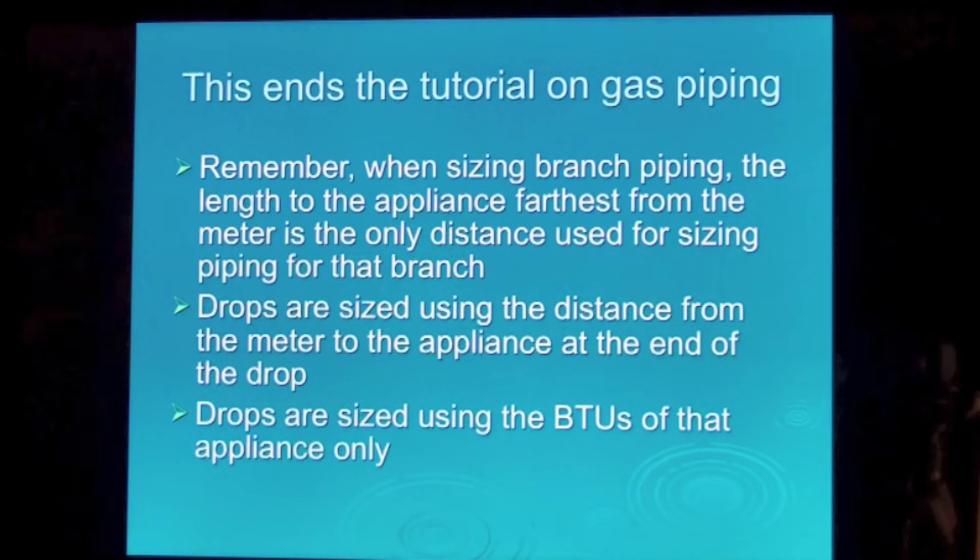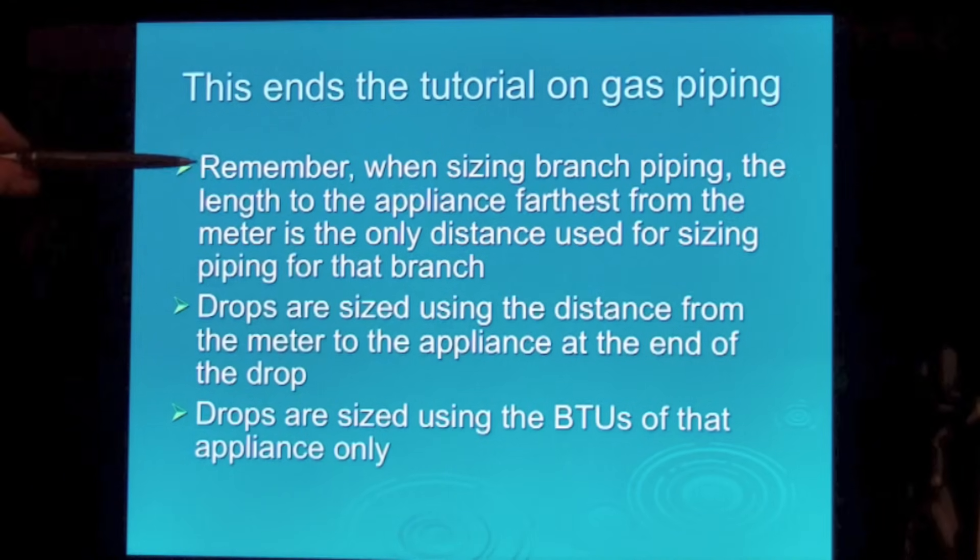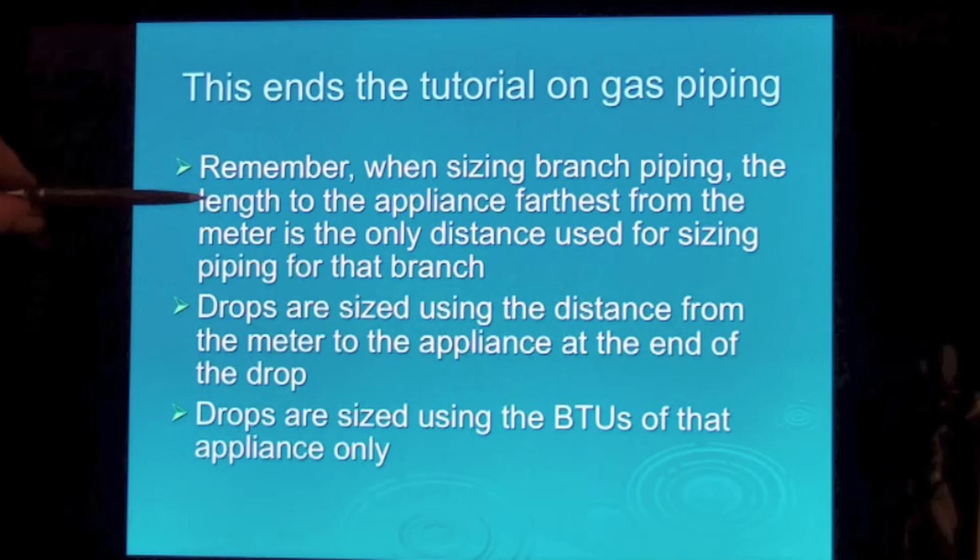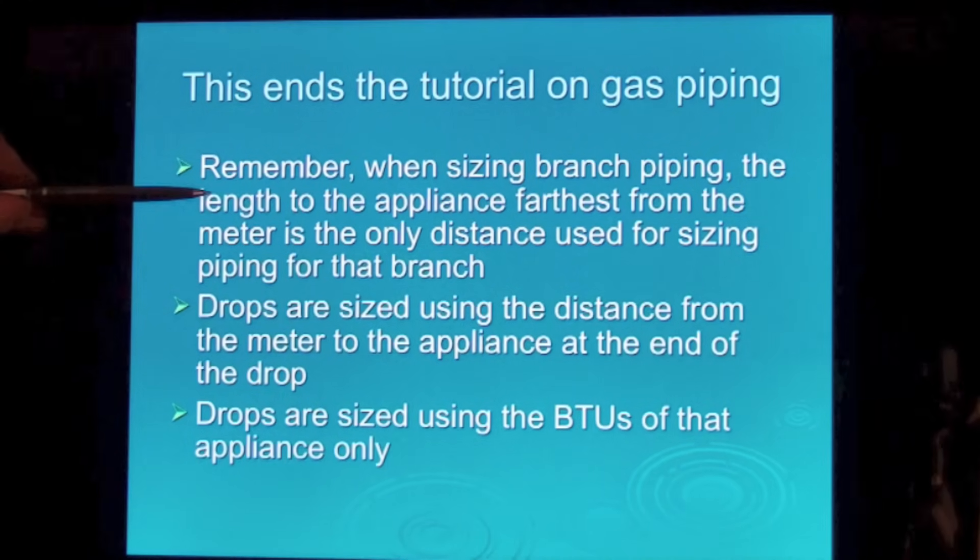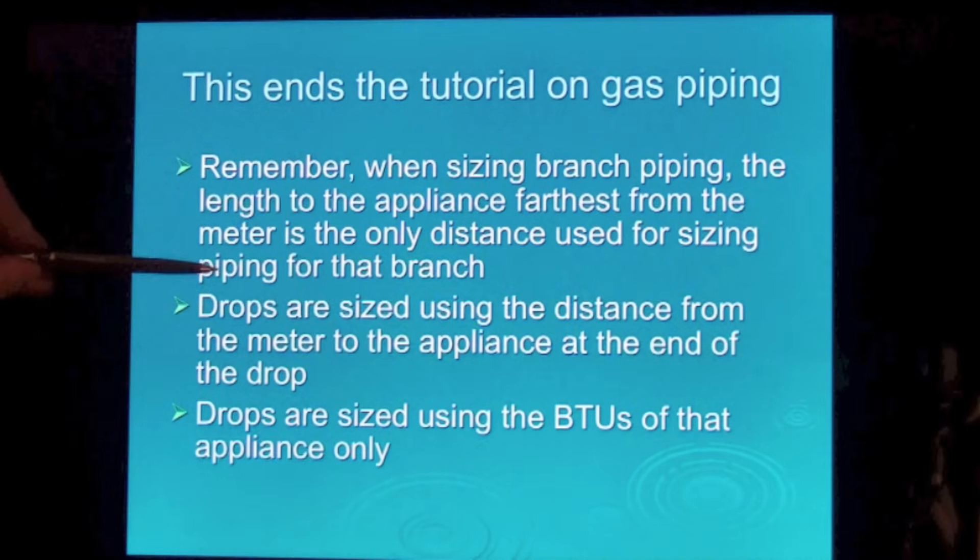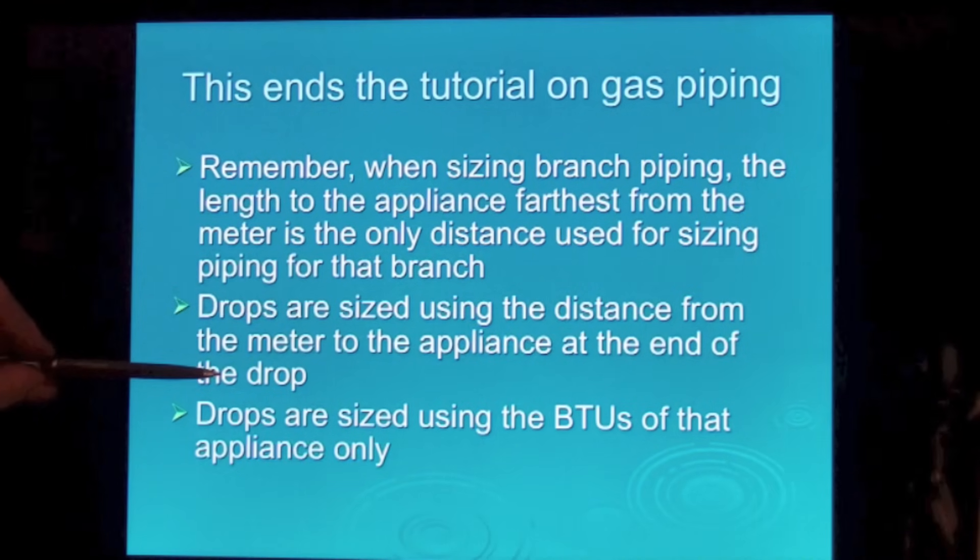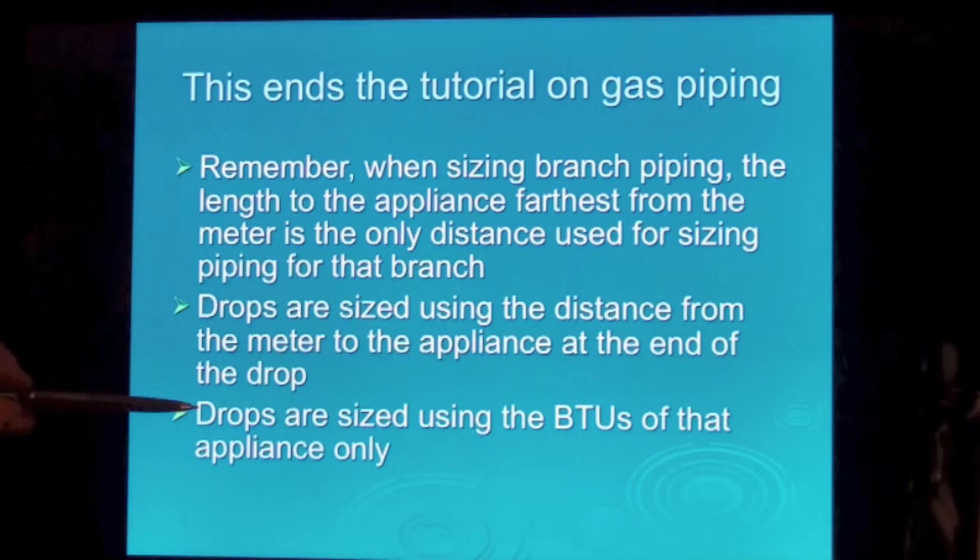A few things to remember when you're sizing pipe. When sizing branch piping, length to the appliance farthest from the meter is the only distance used for sizing piping for that branch. Drops are sized by using the distance from the meter to the appliance at the end of the drop. Drops are sized using the BTUs of that appliance only.